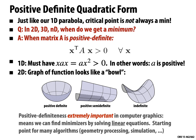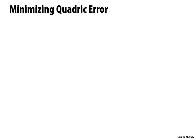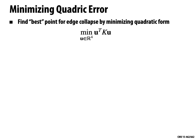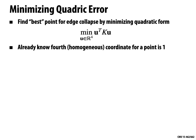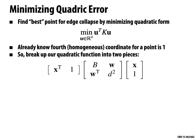Coming back to minimizing the quadratic error for placing a collapsed vertex: among all homogeneous coordinates, we want to find the one that minimizes the sum of squared distances to all planes. Since any point has a homogeneous coordinate of 1, we only need to solve for three components. Breaking the 4×4 matrix K into a 3×3 matrix B, a 3×1 vector W, and a scalar D², we minimize xᵀBx + 2Wᵀx + D by solving 2Bx + 2W = 0, giving x = −B⁻¹W.